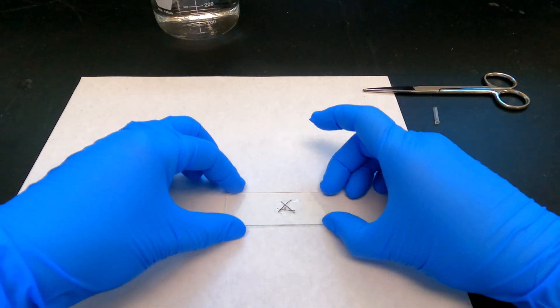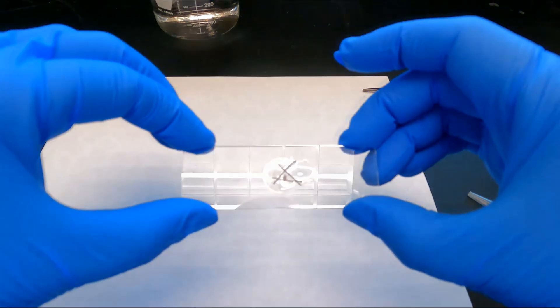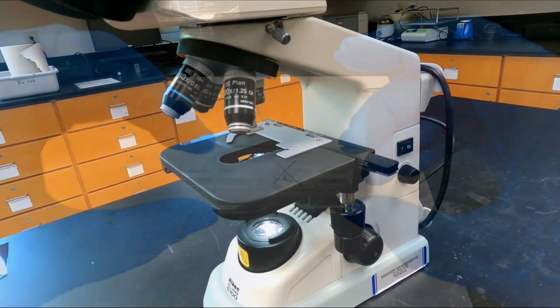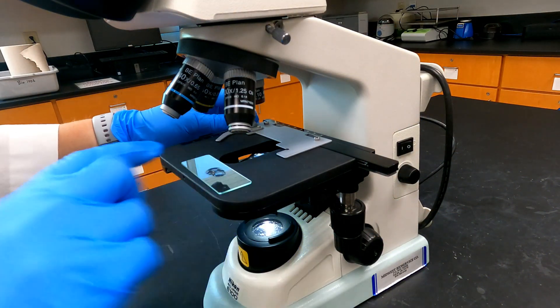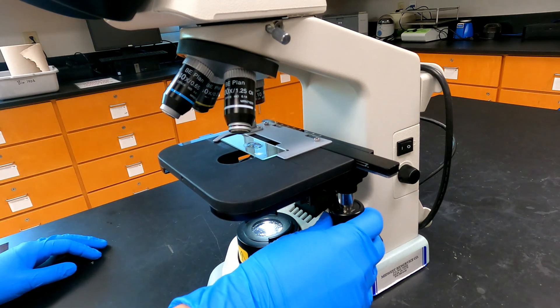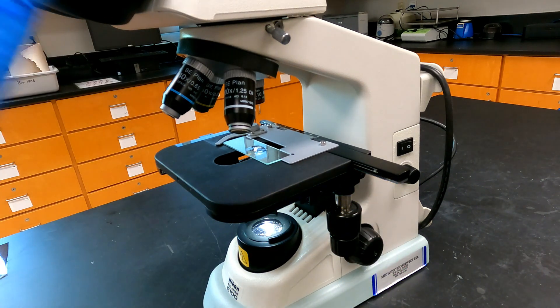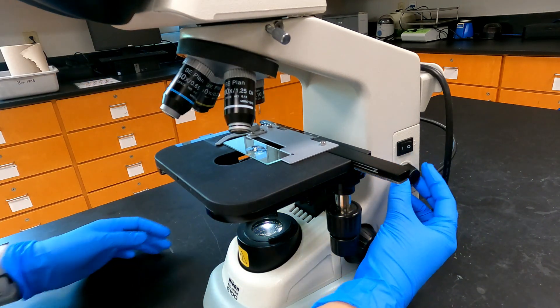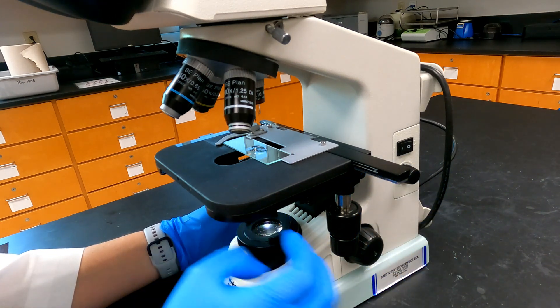Once you have your Daphnia prepared on the slide, check your microscope to make sure the stage is in its lowest position and the 4x objective is in place. Then go ahead and place the slide on the stage, securing it with the slide holder. Center your Daphnia in the path of light coming through the stage. Adjust the amount of light so that you can comfortably look through the ocular lenses, and then raise your stage to its highest position using the coarse focus knob.